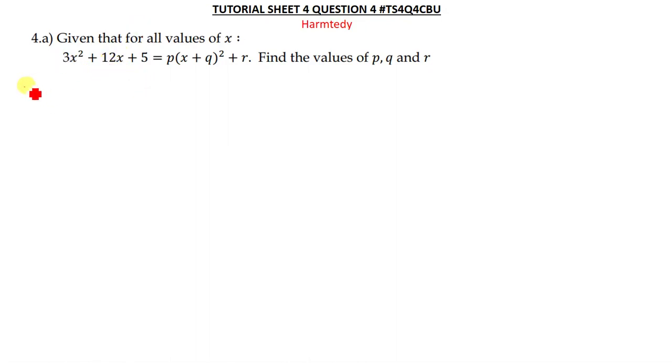So when you factor out the 3, we'll just remain with x squared plus 12 divided by 3, we'll get 4x, and then we close the brackets and then we say plus 5.